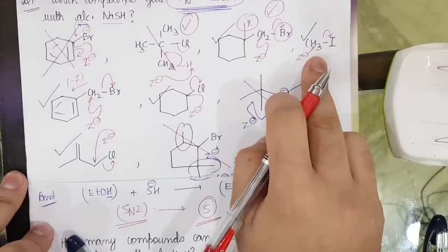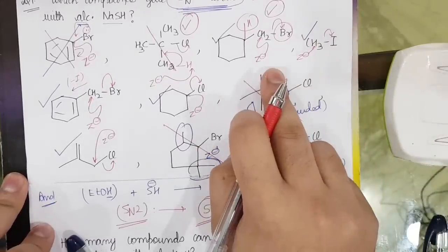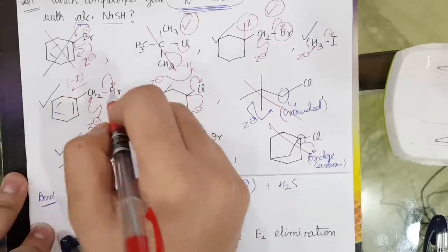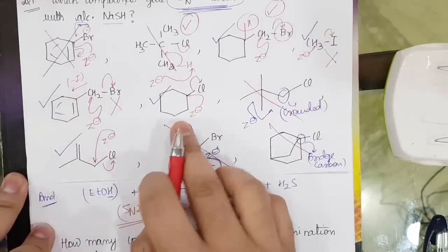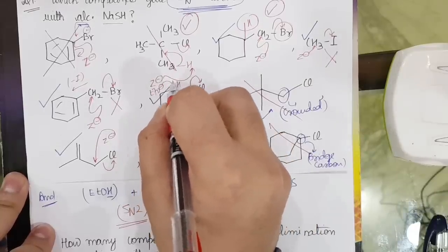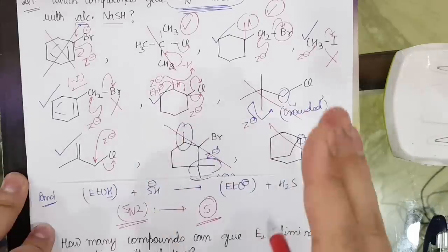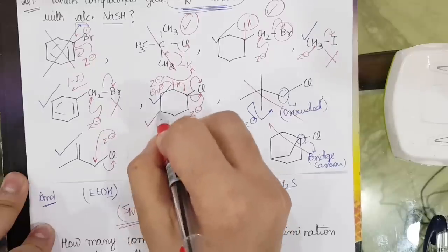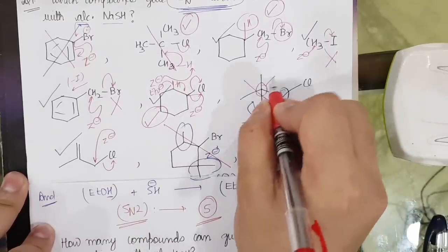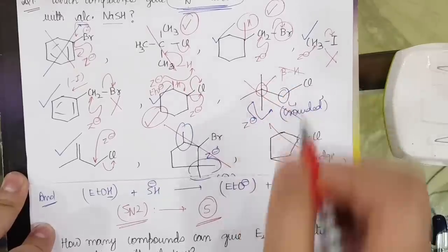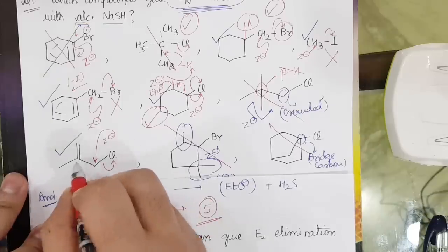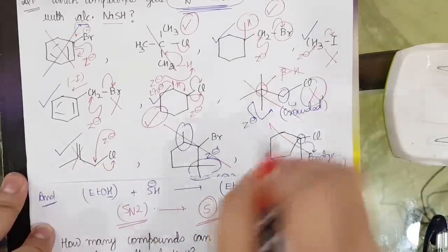In case four, elimination cannot occur because there is no beta hydrogen present. Similarly in the next cases, elimination cannot be done due to lack of beta hydrogen. However, in another case, EtO minus attacks any beta hydrogen and takes out Cl — cyclohexene is formed, so elimination can occur there. In another case, no beta hydrogen is present, so elimination cannot occur.